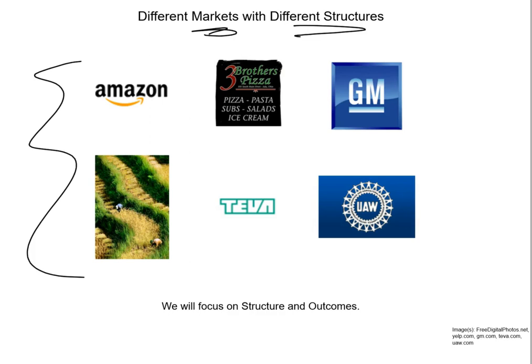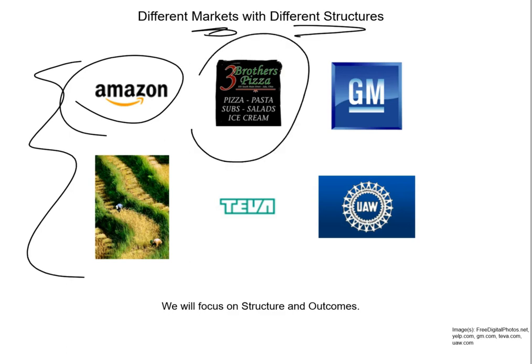We've got a couple of different examples. You can think about Amazon — who their competition is and how they carry out their business. We've also got the name of a local pizza place in Ada, Ohio. There are a couple of these local pizza shops in Ada. Do you have a preference between them? Think about who their competition is, think about how big their market footprint is, think about how they try to make themselves seem different from their competition.